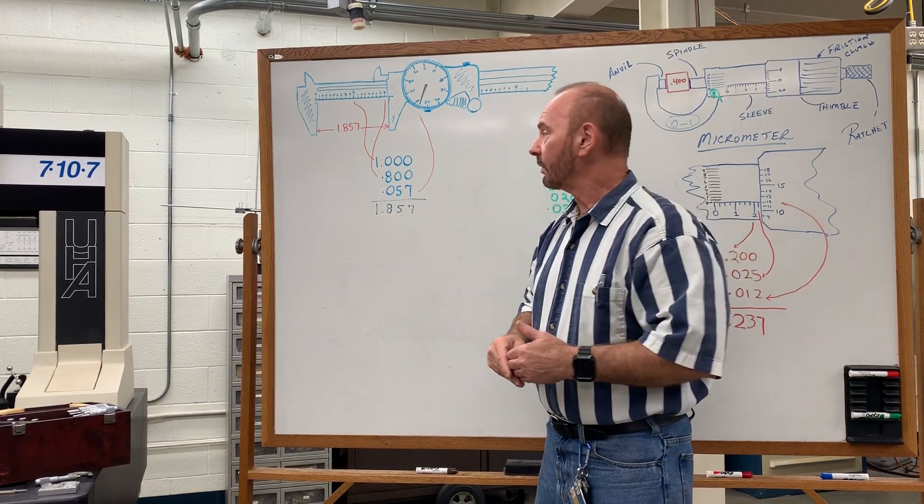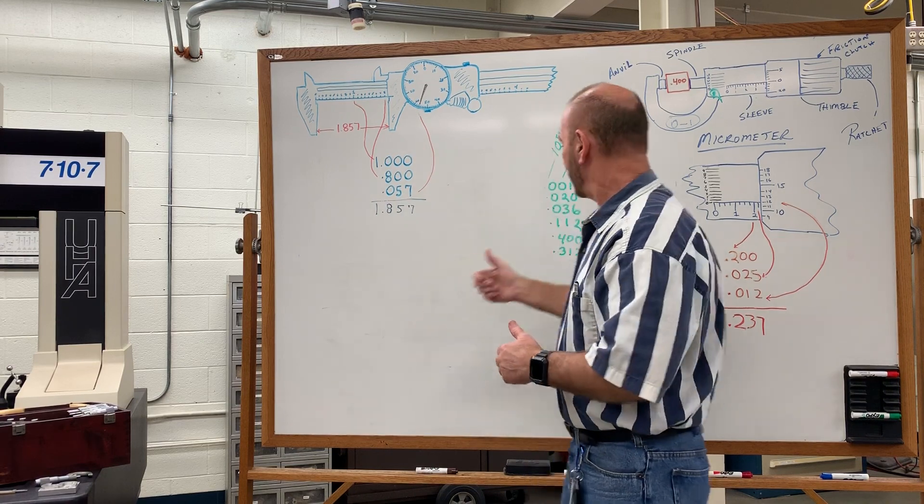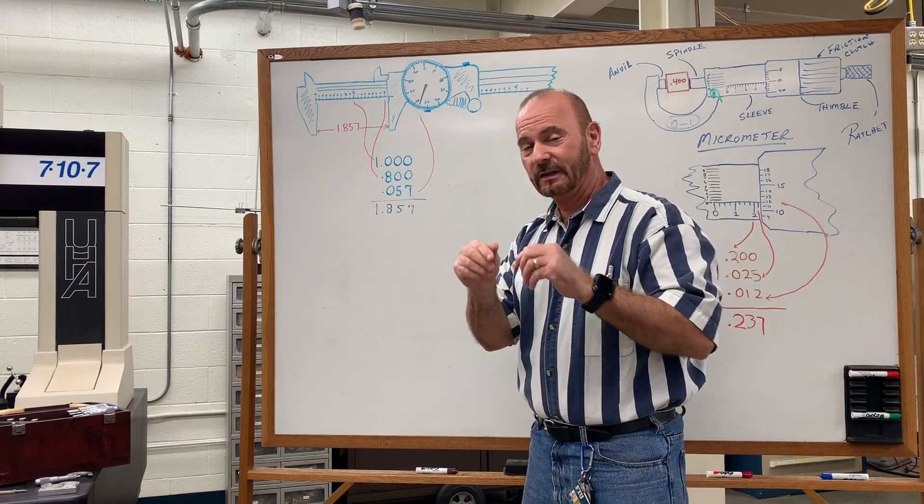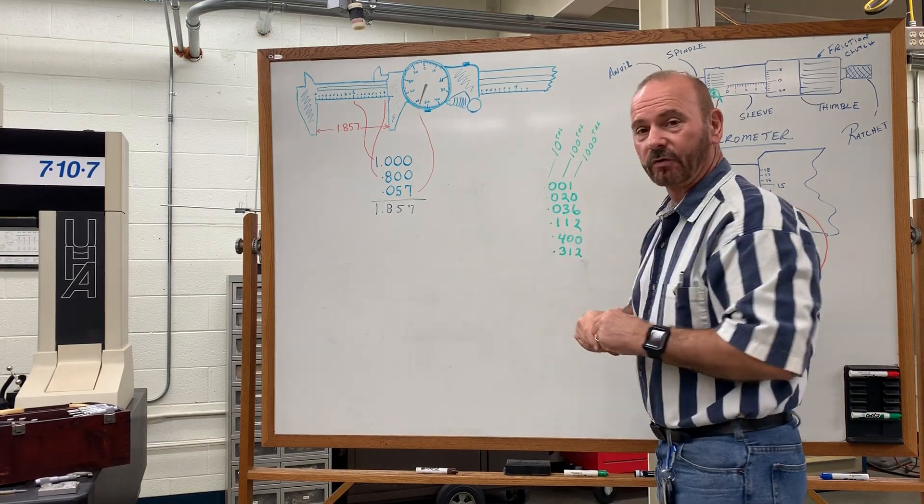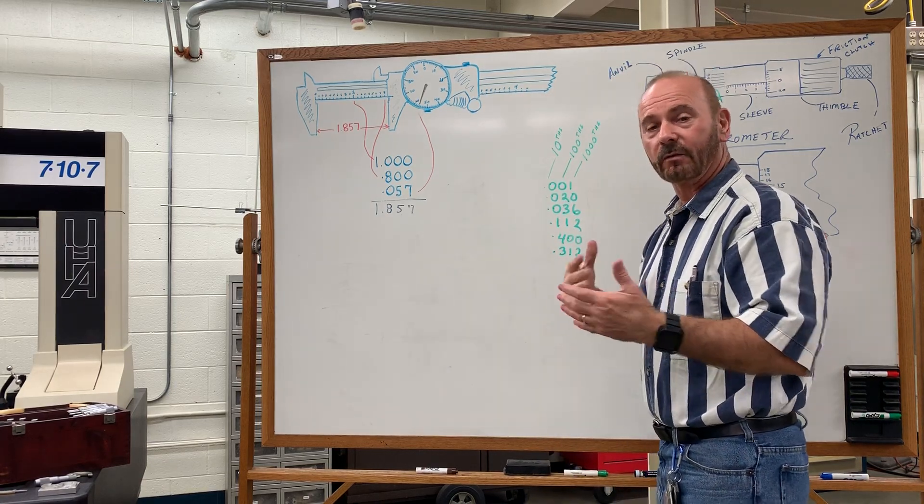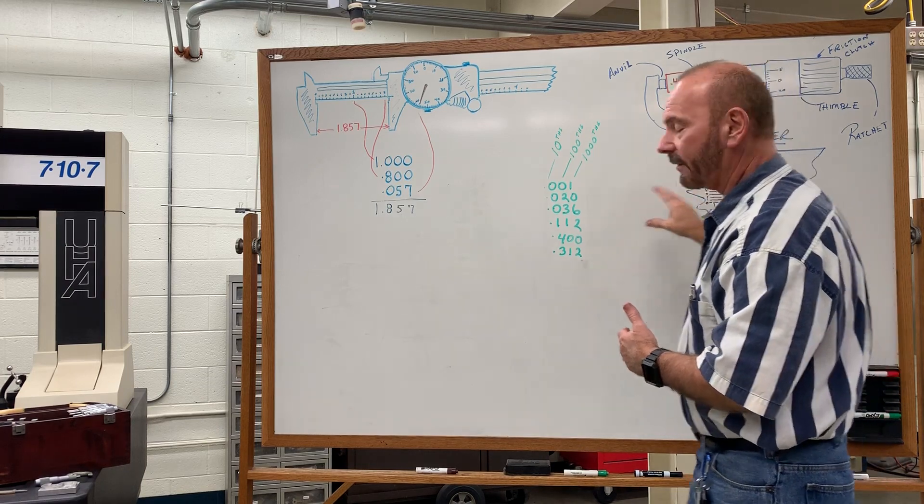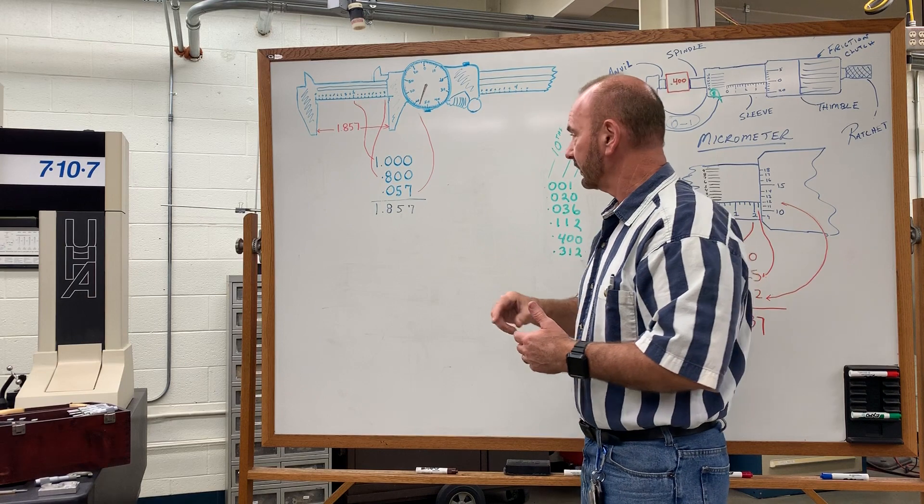On your quiz, you will get a picture of a caliper and a picture of a micrometer and you will need to read the fine print to see what size micrometer you're working with, whether it's a zero to one or one to two, three to four, or so on. And you will need to determine what that value reads as one of your test questions. And the same thing with your caliper.